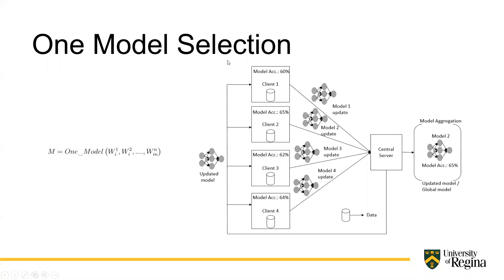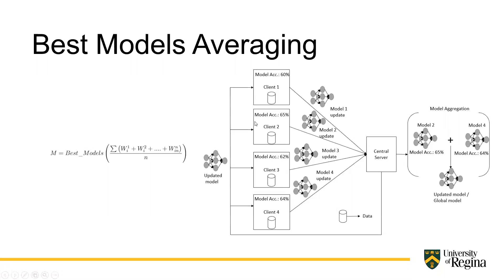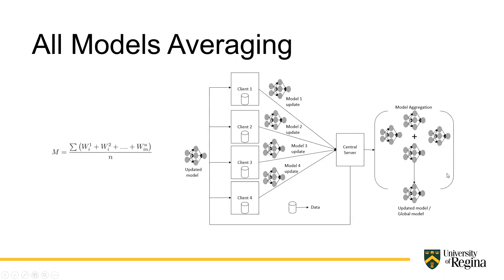The second aggregation technique is one-model selection: from four clients, I select only the one with the highest model accuracy and send that model to all local clients in the next iteration, to see how a single good model affects others' performance. The third technique is best-model averaging: I drop the bad-performing models and only average the better ones. For example, if accuracies are 60%, 65%, 62%, 64%, I take the top two (65% and 64%) and average them together.